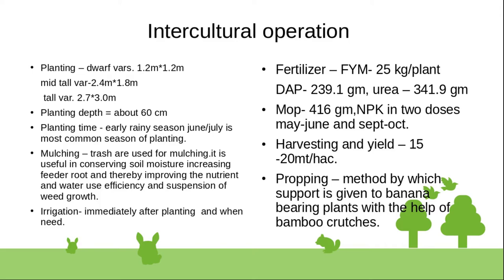Propping is a method by which support is given to banana fruit-bearing plants. Bamboo is commonly used as a support to prevent the plant from bending or falling.